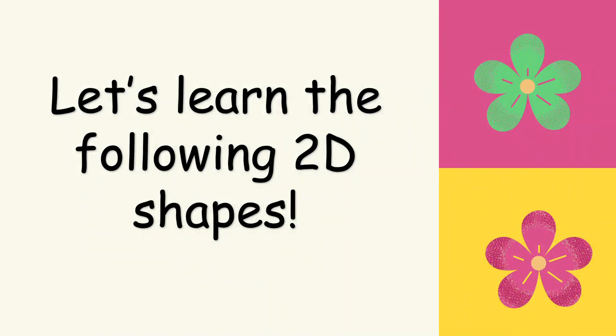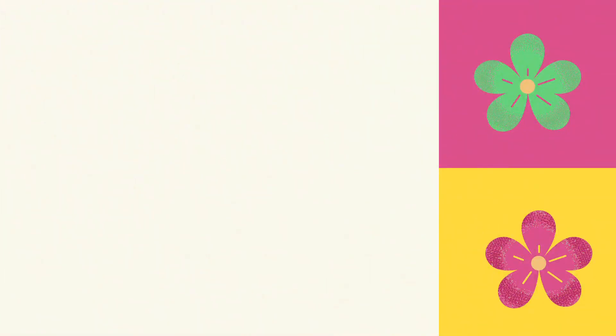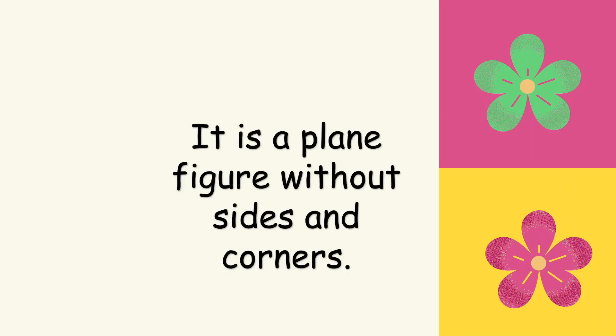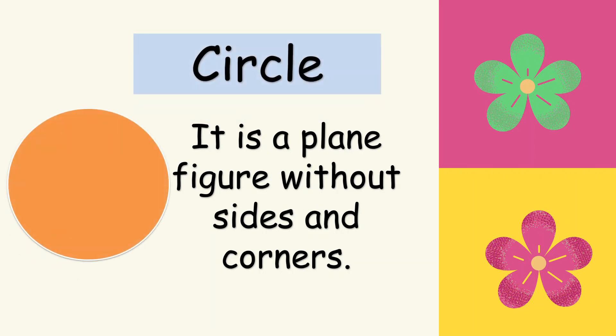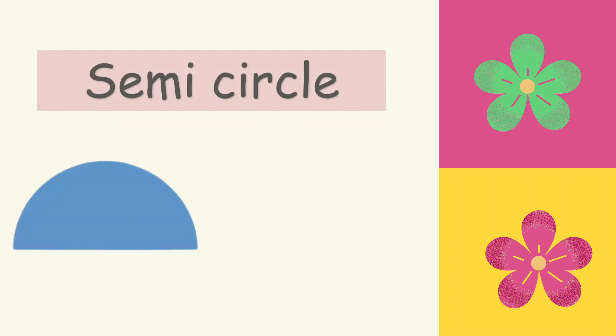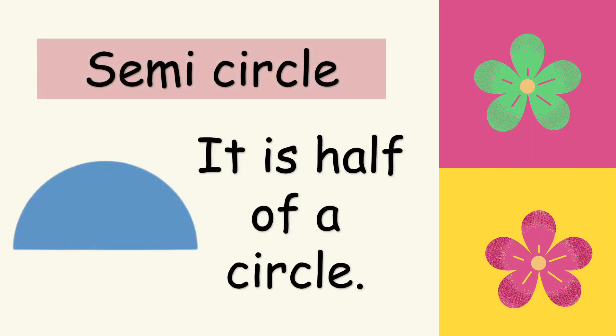Now let's learn — or maybe recall — the following 2D shapes. This shape is a plain figure without sides and corners. We call it a circle: no sides, no corners. How about this one? We just learned this a while ago — it's a semicircle. It is half of a circle.